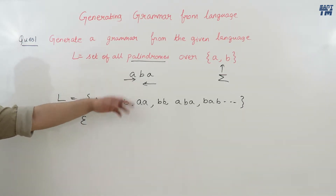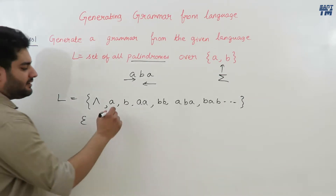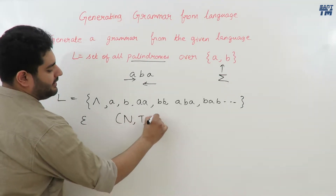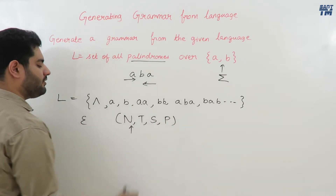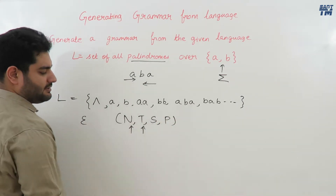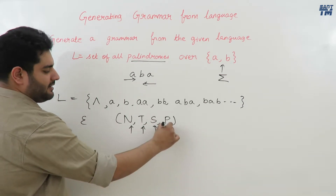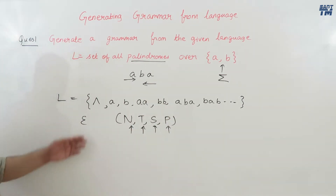A grammar is a four-tuple (N, T, S, P) where N is our set of non-terminals, T is the set of terminals, S is the start symbol, and P is our set of production rules. We have to form these production rules that will produce this language.